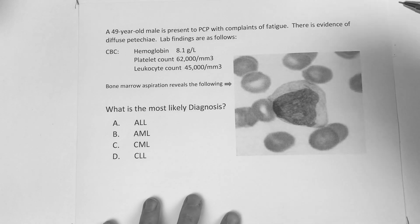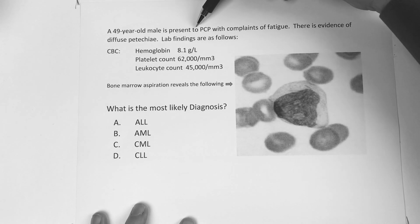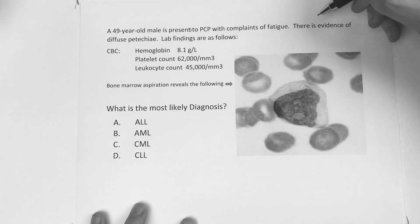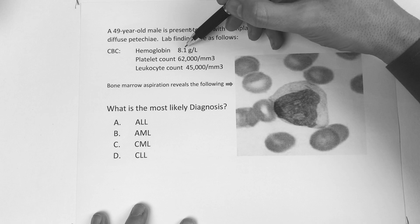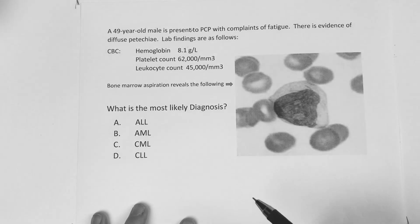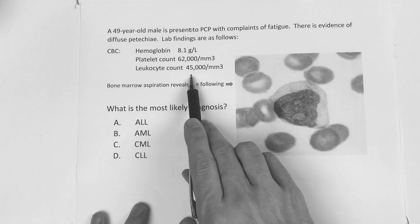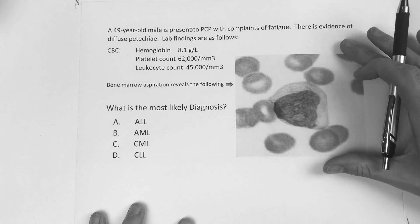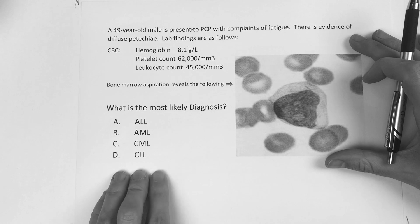And the last question. A 49-year-old male presents to his PCP with complaints of fatigue. There's evidence of diffuse petechiae. Lab findings are as follows: Hemoglobin is 8, platelets are 62,000, leukocyte count 45,000. Bone marrow reveals a slide — it's hard to see, but you can answer it by the clinical information alone. What is the most likely diagnosis?